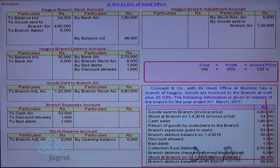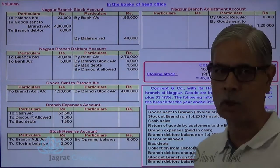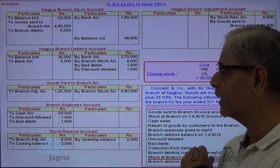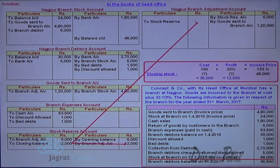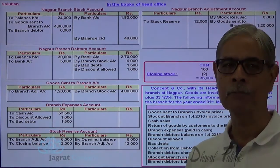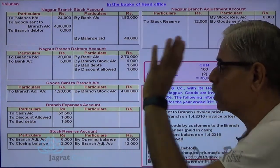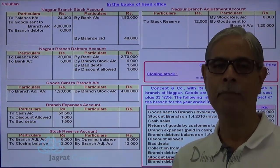Closing stock at branch is 48,000 at invoice price. Finding the profit element: 133 and one-third is to 100, for 48,000 the cost is 36,000 and the profit element is 12,000. So the closing stock reserve should be 12,000. The entry is: branch adjustment account debit to stock reserve account credit, 12,000. This is how stock recorded at invoice price results in a closing stock reserve balance of 12,000.